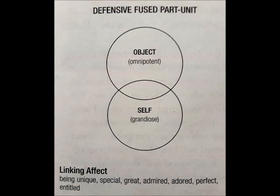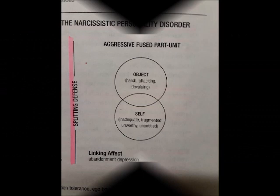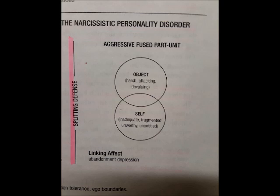However, in order to know that this is going on in someone's mind, you'll have to observe their affective states over time, and even more specifically, try to determine their linking effects. For the narcissist, this feels like being special, unique, admired, adored, perfect, and entitled. On the right, you have the aggressive, fused part unit, with the internalized primary object represented as harsh, attacking, and devaluing. The part self sees itself as inadequate, fragmented, unworthy, and unentitled.